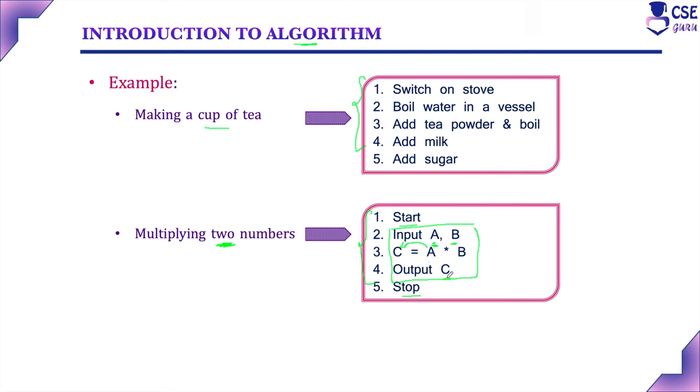Then stop the program. These are all the sequence of instructions needed to be carried to solve the problem to multiply two numbers. This is the algorithm.